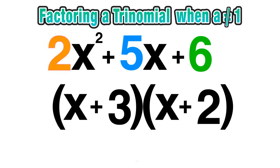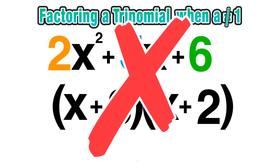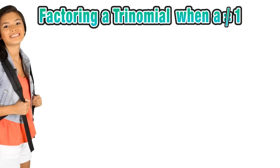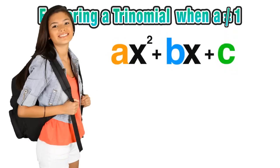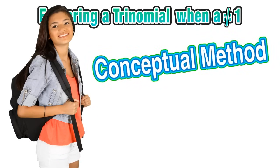But when that leading coefficient, that a value, is anything other than 1—let's say it was a 2—these factors would not apply anymore and we're going to have to use a different strategy. So how exactly can we factor a trinomial when a does not equal 1?